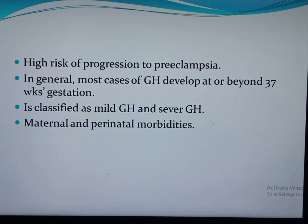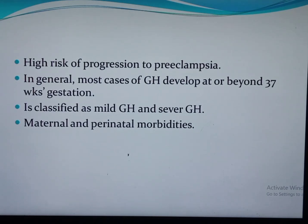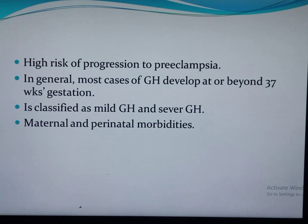Women with gestational hypertension have a high risk of progression to preeclampsia. The risk depends on gestational age at diagnosis: if gestational hypertension is diagnosed before 35 weeks, the risk of progression to preeclampsia reaches around 50 percent; if diagnosed later, the risk is lower. Most women with gestational hypertension are diagnosed at or beyond 37 weeks, so overall pregnancy outcomes are nearly similar to normotensive women, though the rate of caesarean section is higher due to increased induction of labor.